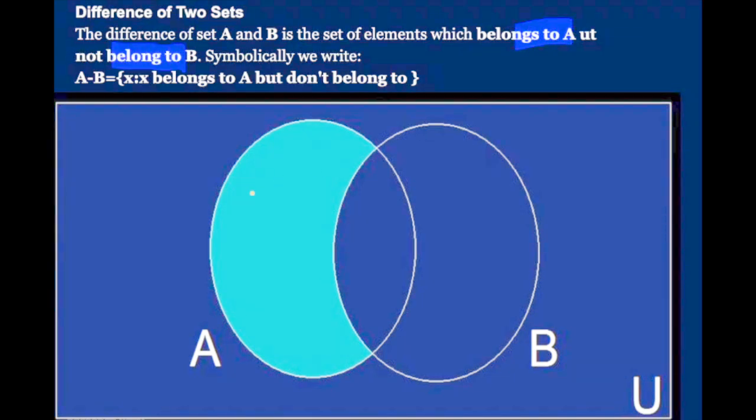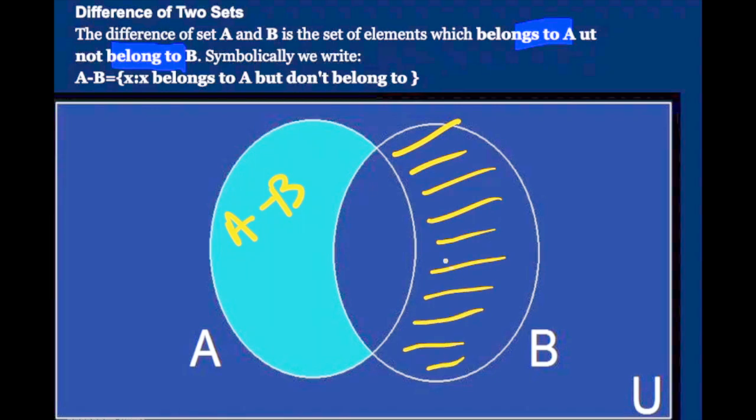Symbolically, we write A minus B, such that X belongs to set A but doesn't belong to set B. The shaded part is A minus B, the difference of two sets. And this shaded part is B minus A.